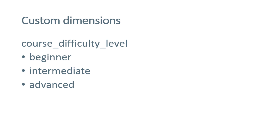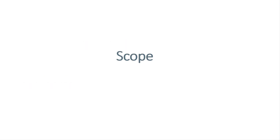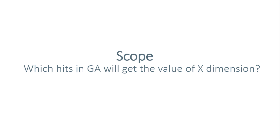Before we jump into the actual configuration of custom dimensions in Google Analytics 4, I want to talk about one more thing that Universal Analytics users will remember: scope. Scope determines to which particular hits a custom dimension will apply. I'm pretty sure that sounds confusing, but bear with me and I'll show you some examples.